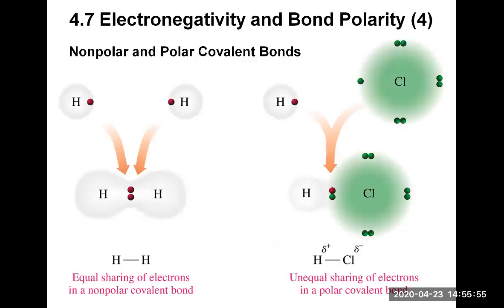This diagram shows the difference between polar and non-polar bonds. On the left, the hydrogen molecule has a non-polar bond between the two hydrogen atoms. Because both atoms are the same type, they pull on the electrons the same way, so the electrons are shared equally — that is a non-polar covalent bond.